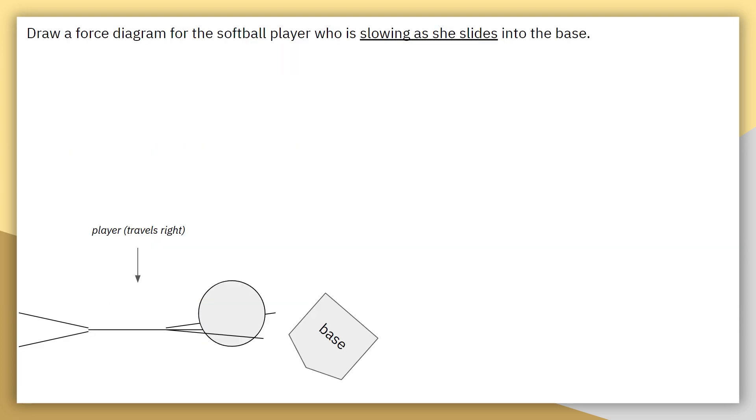So for this example, we're drawing a force diagram for a softball player who is slowing as she slides into the base. So this player is traveling to the right while she is approaching home base.